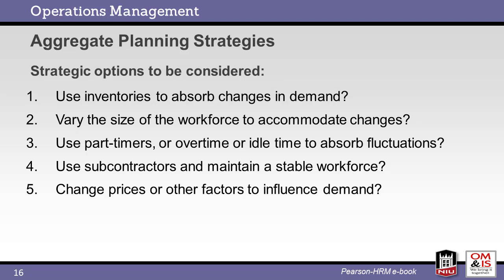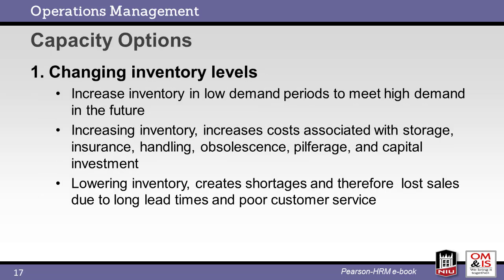Different strategies may be used to match production capacity to demand. These include inventory, a flexible workforce, and price changes to influence customer demand. The first option, changing inventory levels, is commonly used to ensure product availability. Excess inventory can result in increased material costs, storage requirements, and capital investment.